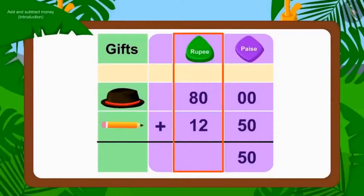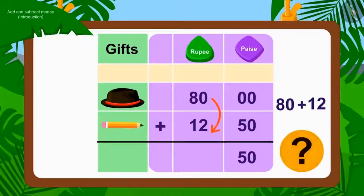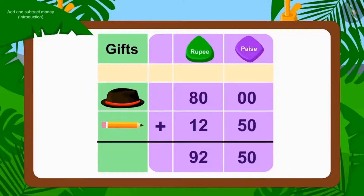Now we will add the rupee numbers. The cap costs Rs. 80.00 and the pencil is Rs. 12.00. 80 added to 12 is Rs. 92.00. In this way, the total value of both items became Rs. 92.00 and 50 paise.